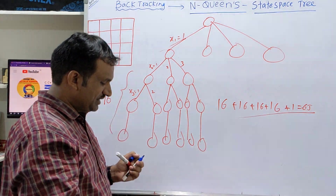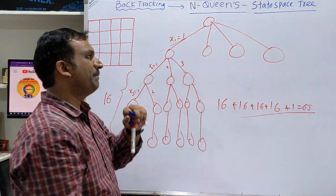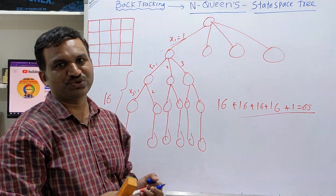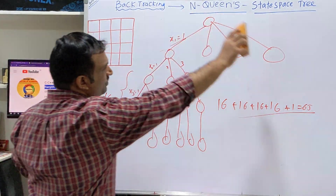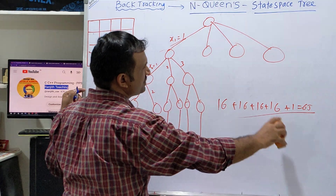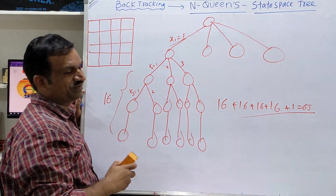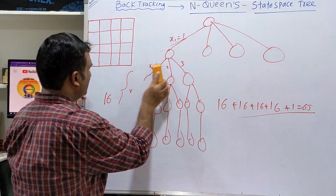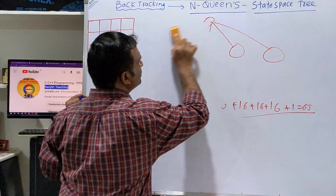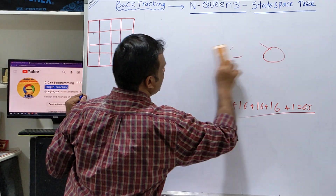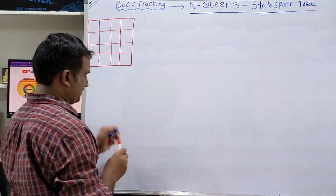But let me draw a state space tree with only the backtracking mechanism. I want to show you the backtracking mechanism. Out of all possible solutions, we will get only 2 perfect solutions in the 4 by 4 case. Now let me show you how the backtracking will happen using the state space tree.